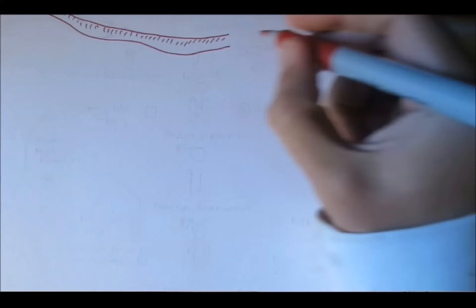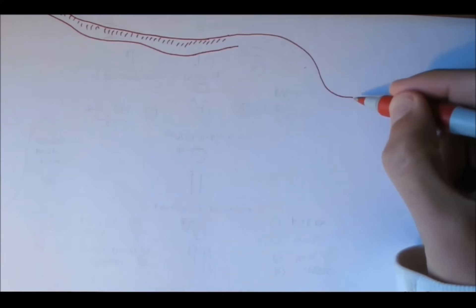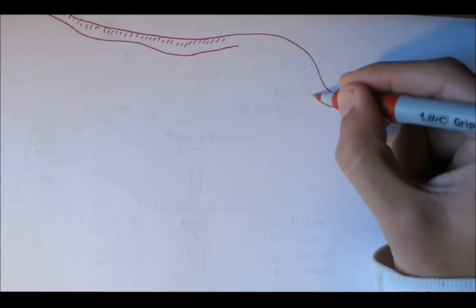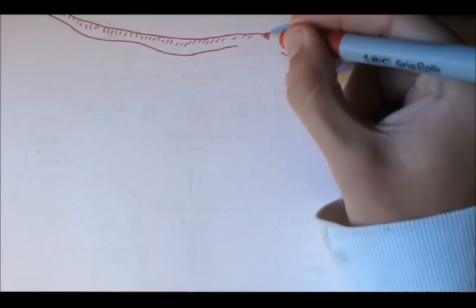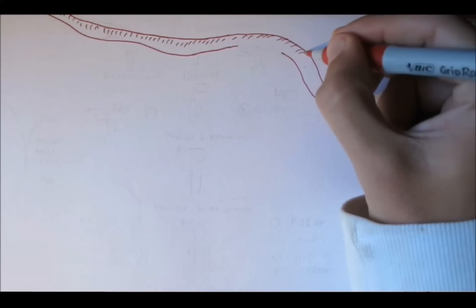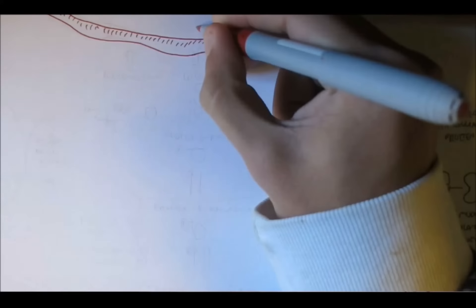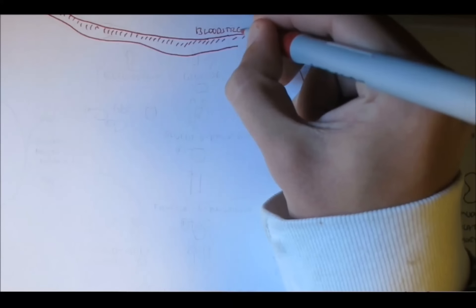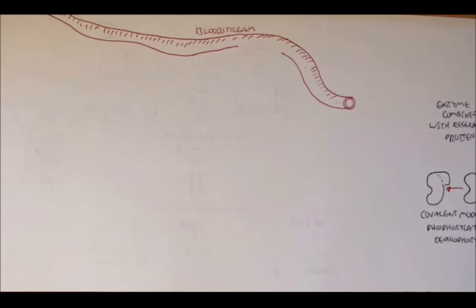This video is on the regulation of glycolysis and gluconeogenesis. There are three main reactions — well, six if you include the reverse — that regulate glycolysis and gluconeogenesis. The main reactions are the irreversible ones in glycolysis, which can't use the same enzyme and require a different enzyme. You can review this in the gluconeogenesis video.